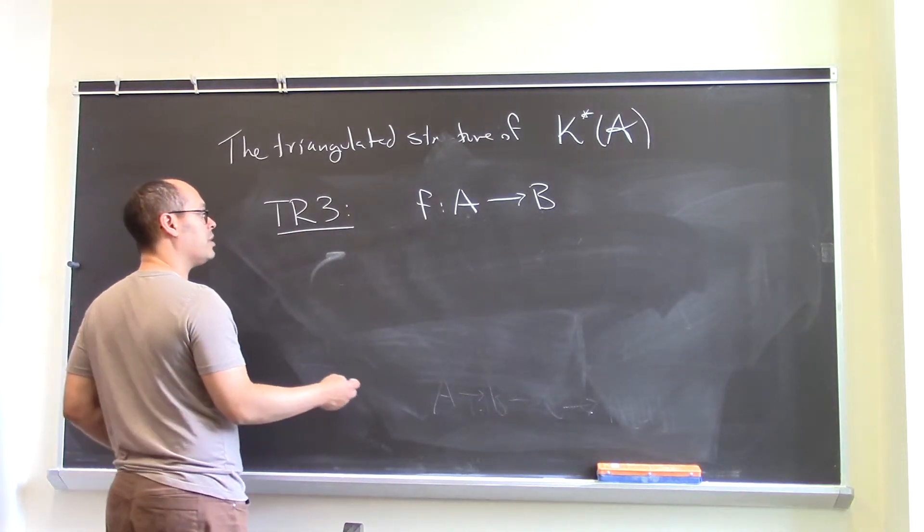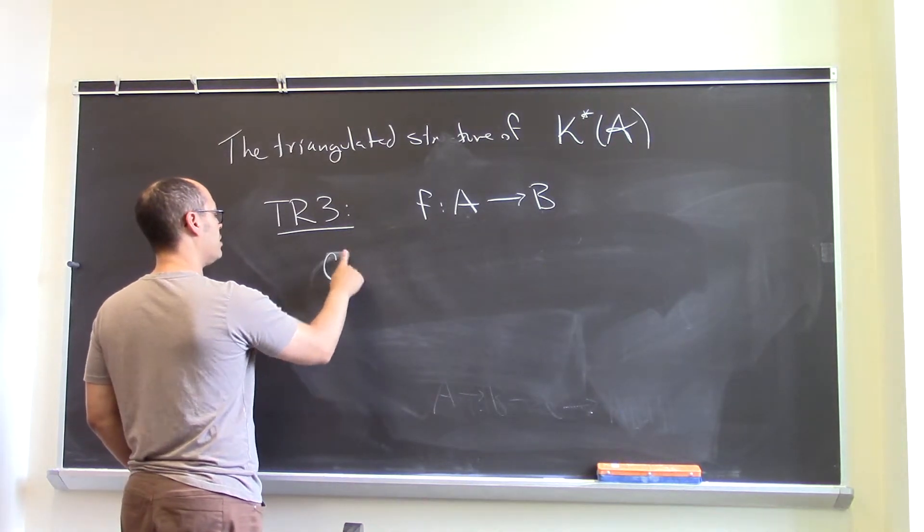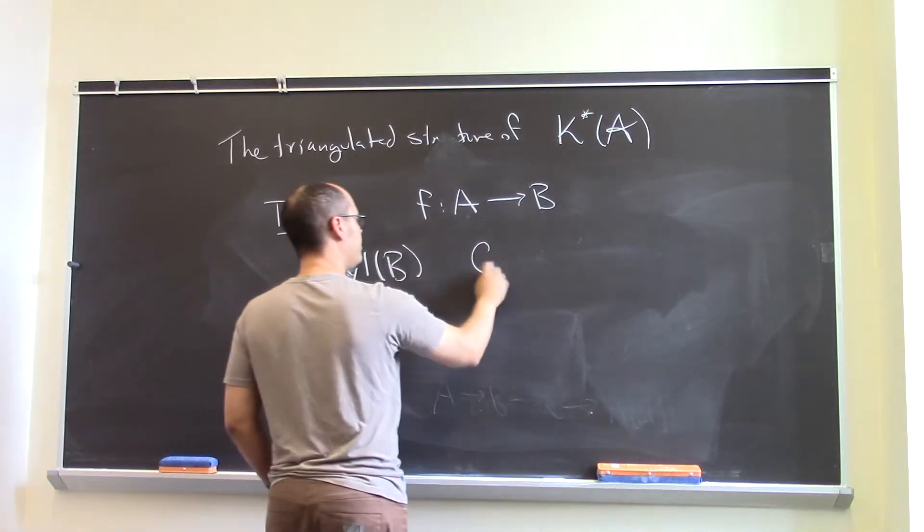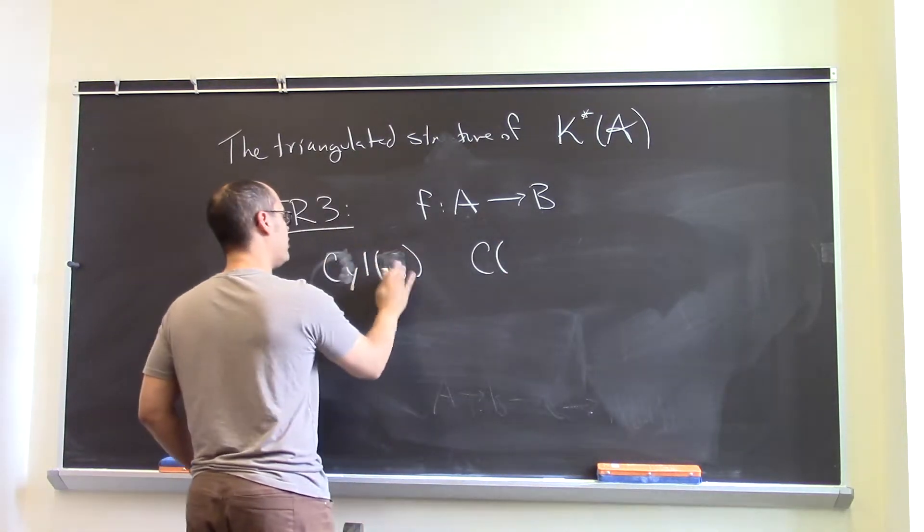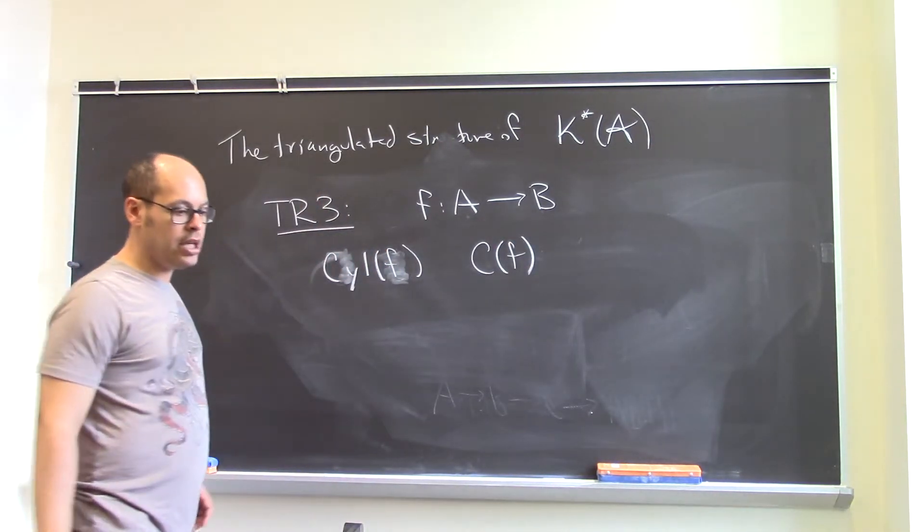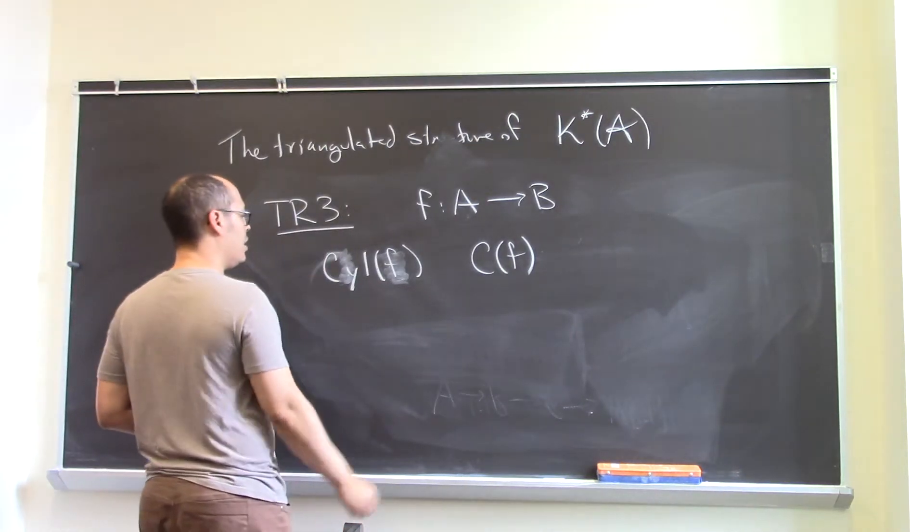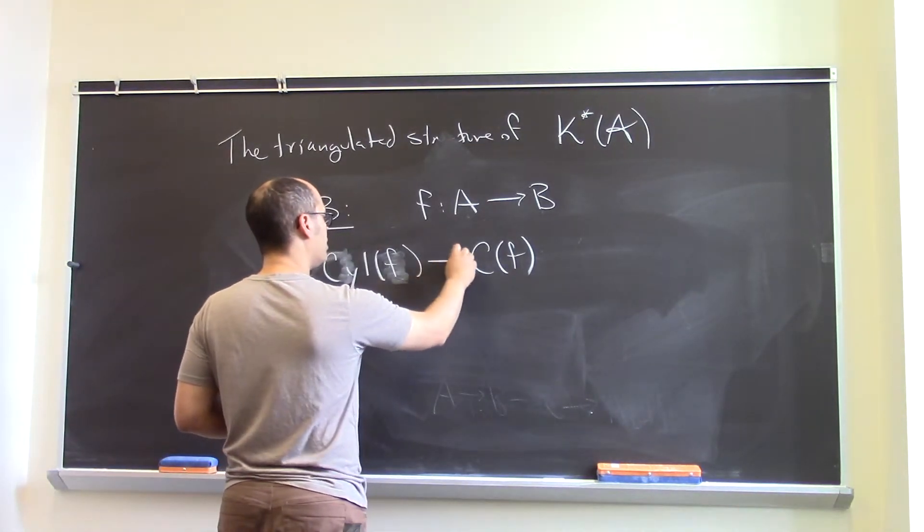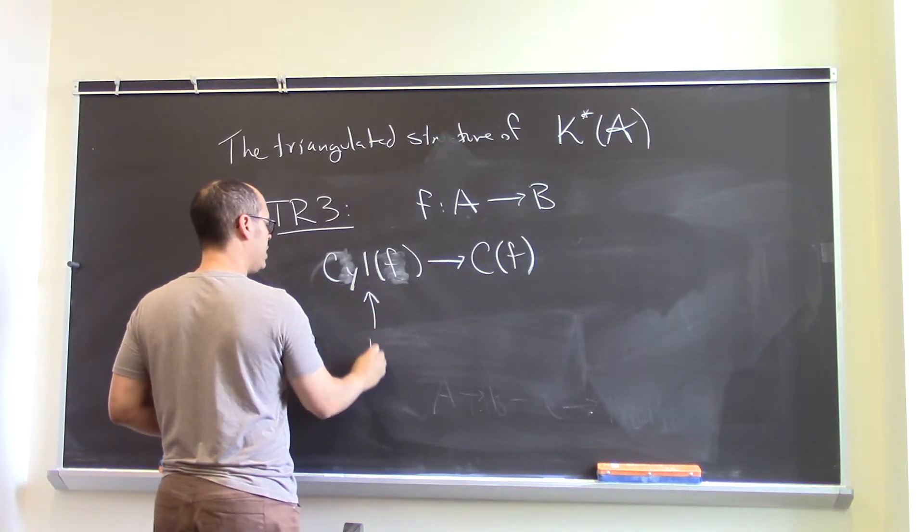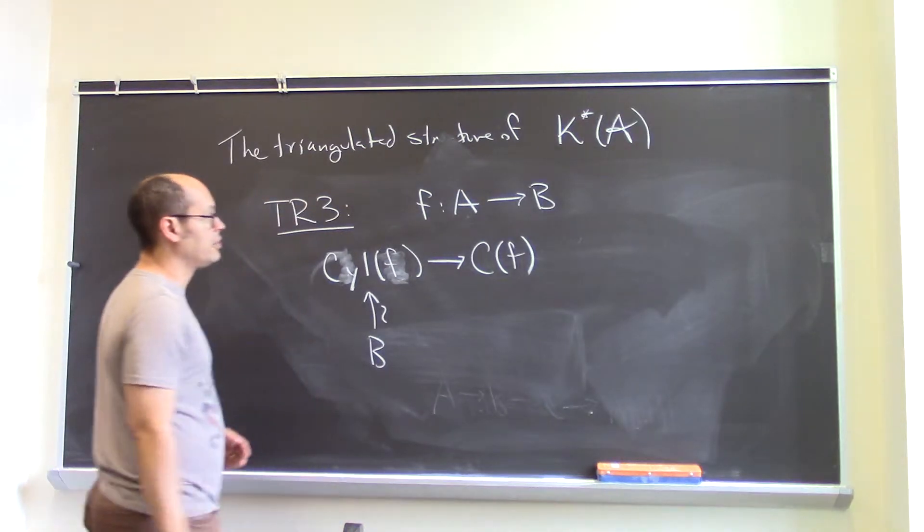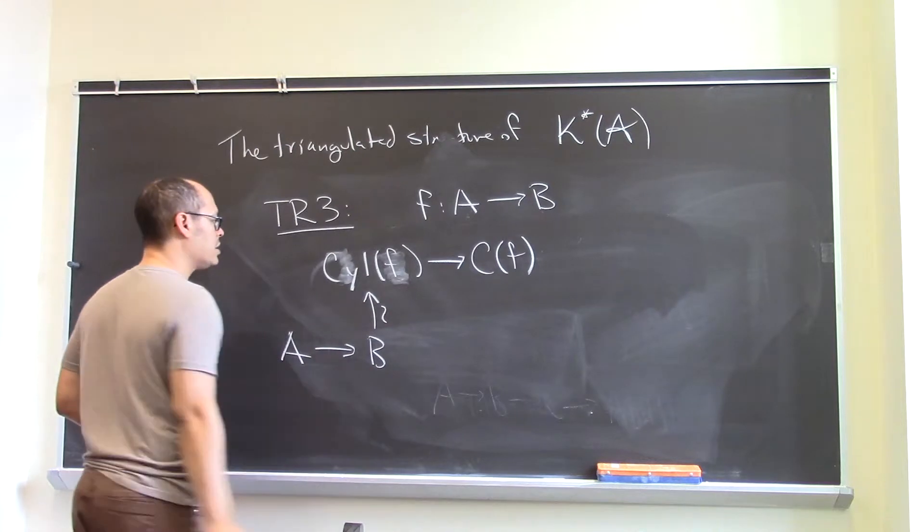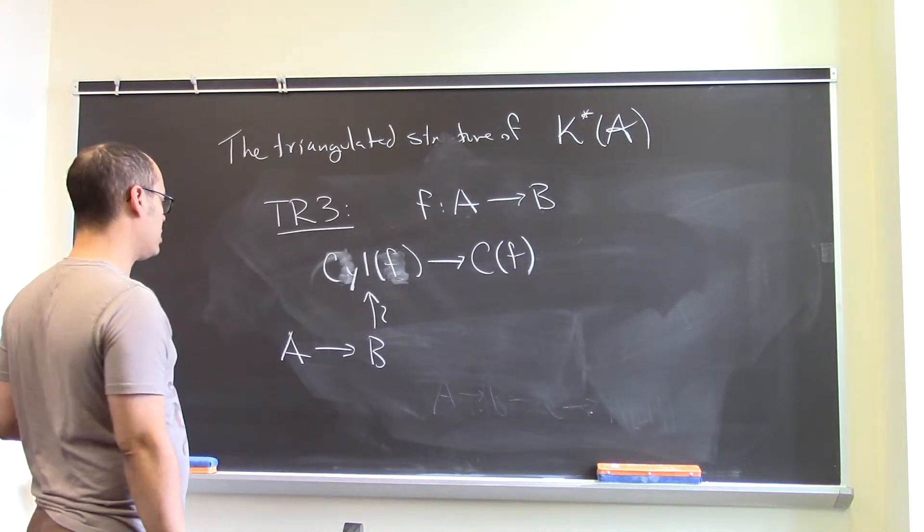So to do this, one introduces a couple of other objects, namely the cylinder and the cone, mapping cone. And these come with a natural map. This goes to that. This admits a map from B, which turns out to be a chain homotopy equivalence. And so what then one does is one can consider the map from A to B really as corresponding as a map from A to the cylinder.